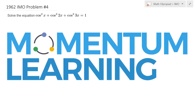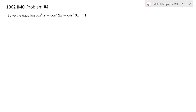This is 1962 IMO Problem 4. We would like to solve this trigonometric equation. Obviously you can tackle this equation in numerous ways using trigonometric identities, but for this solution I prefer to use complex numbers. The main result we will need to accomplish that is the celebrated de Moivre's theorem.